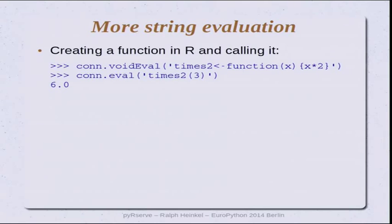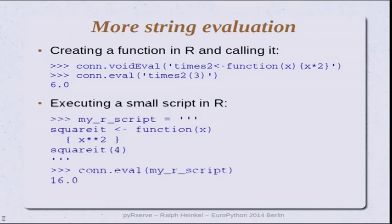Some more examples of string evaluations: you can even define a function on the R side. Here I create a function called times_two which takes one argument. The second eval command executes that function and the result is returned back to Python. You can even evaluate multiline scripts which you define in Python, store them in a string, send them over, execute them, and get the result back. That's pretty straightforward.